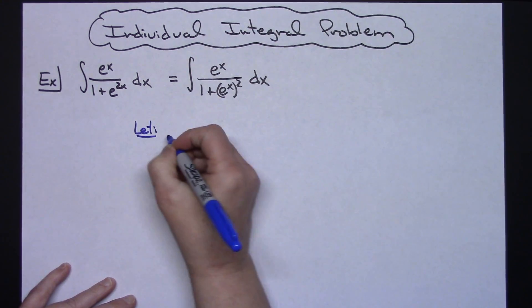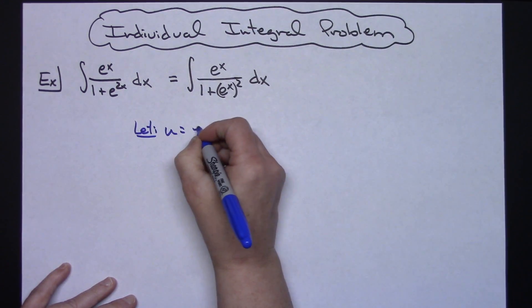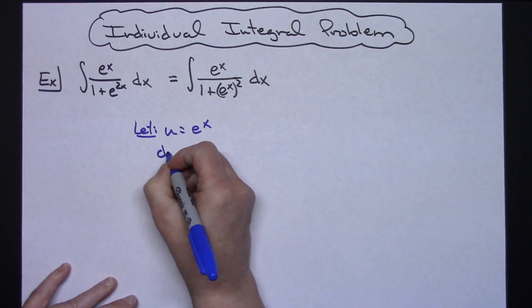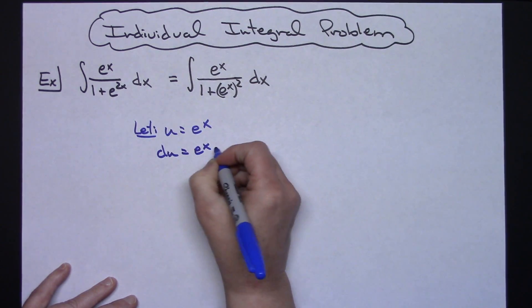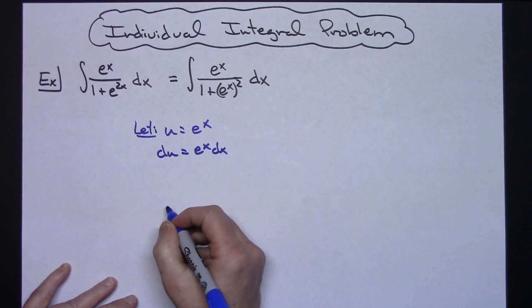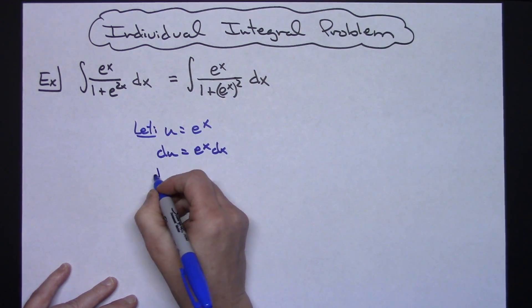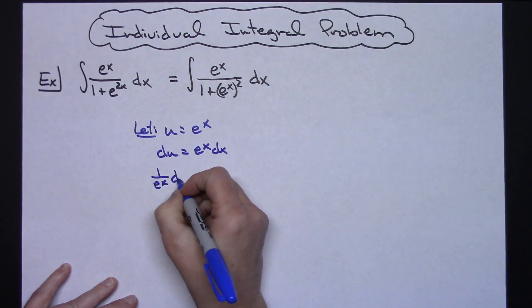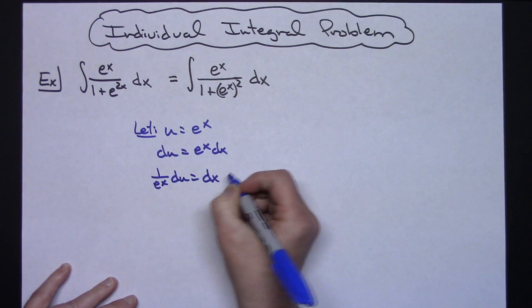So I'm going to let my u be e to the x. Du then is going to be e to the x dx, and when I divide both sides by e to the x there, I'll have 1 over e to the x du equals my dx.